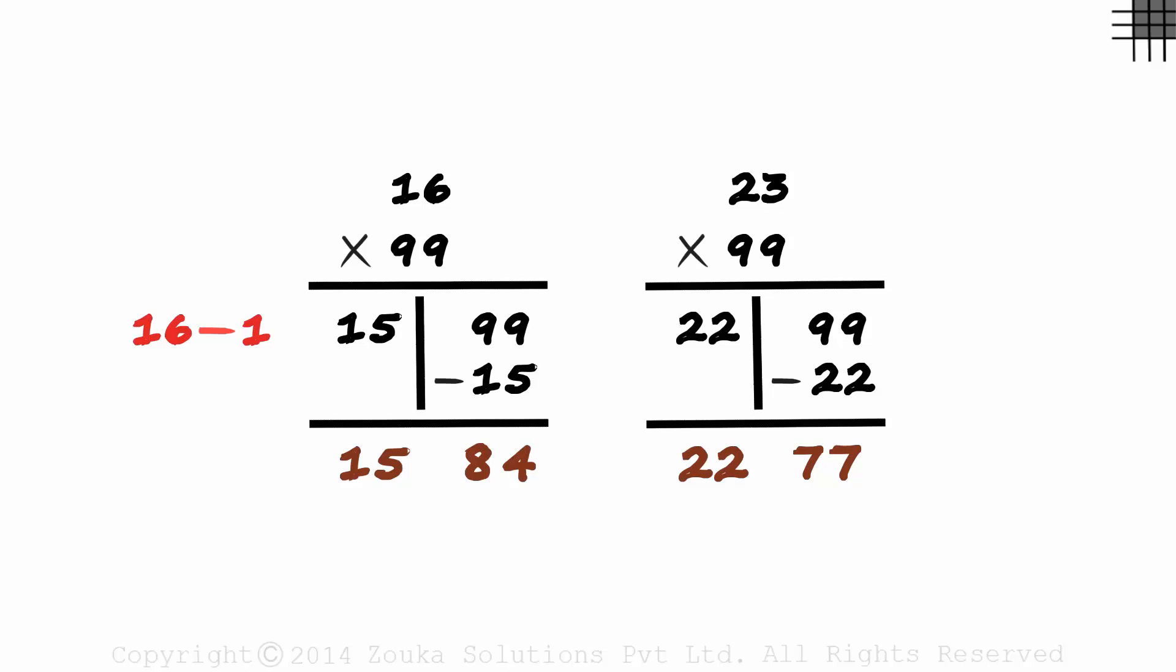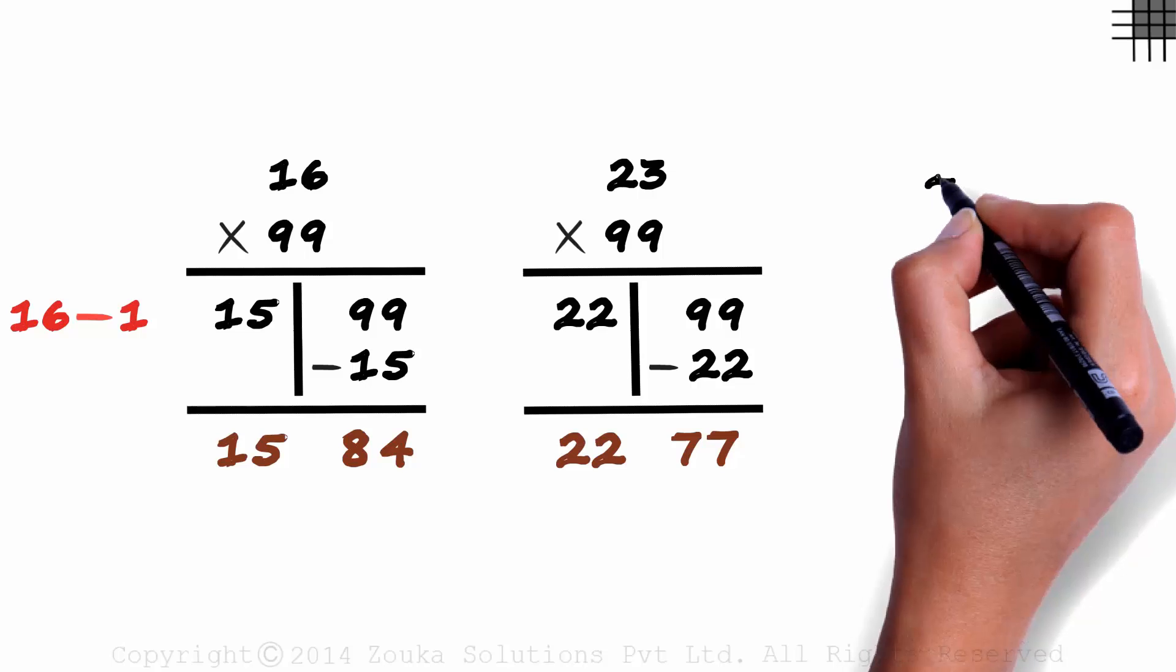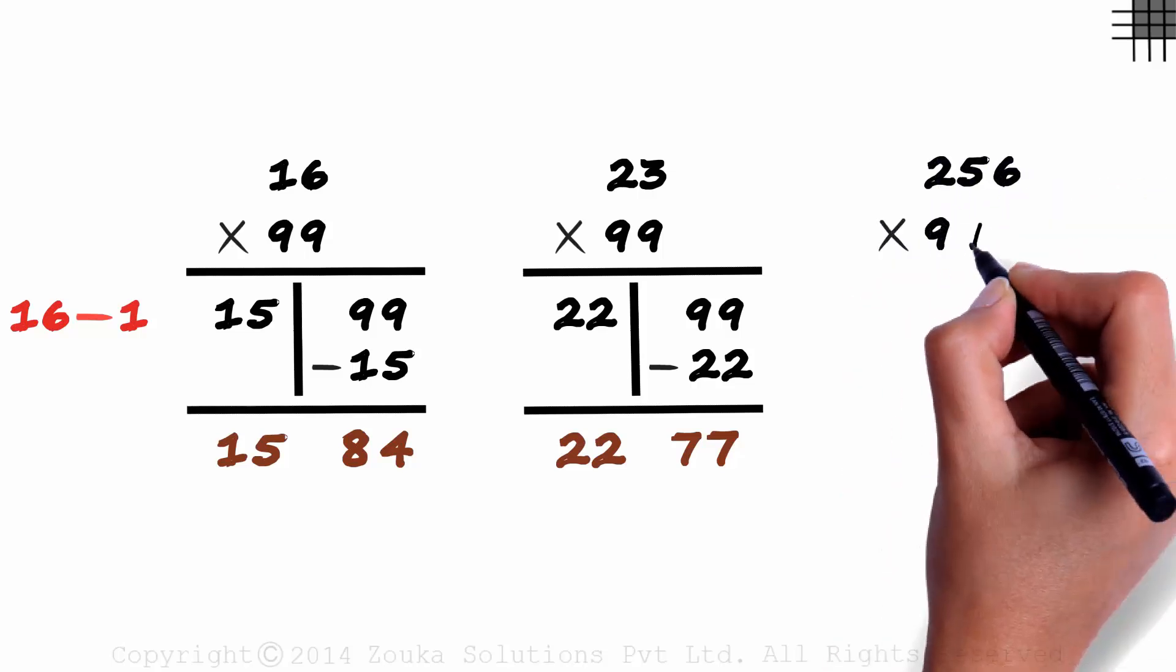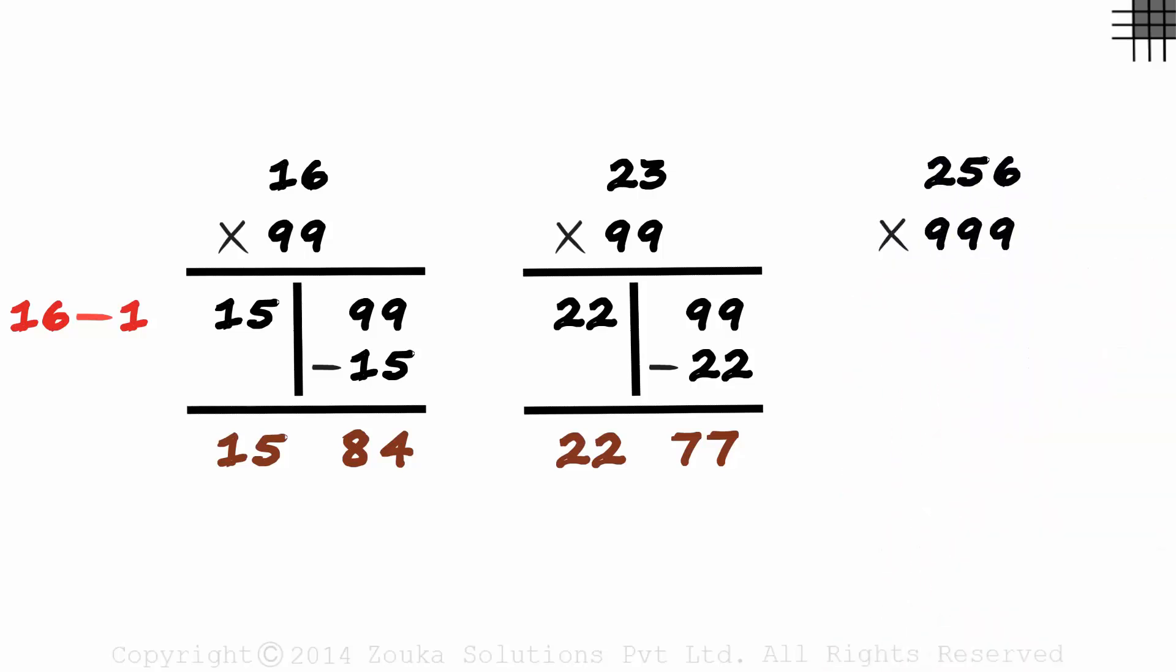Notice that we are taking approximately five seconds to answer these questions. But wait, will anything change if we have three-digit numbers instead? Say we have something like two hundred and fifty-six times nine hundred and ninety-nine. No, the technique remains exactly the same.